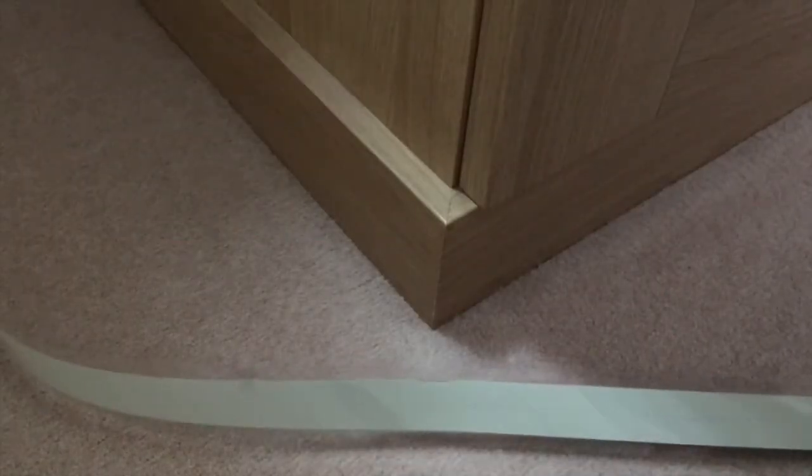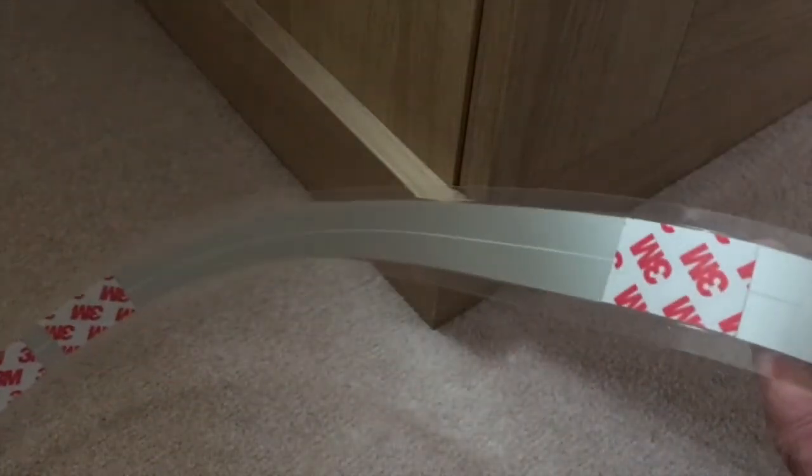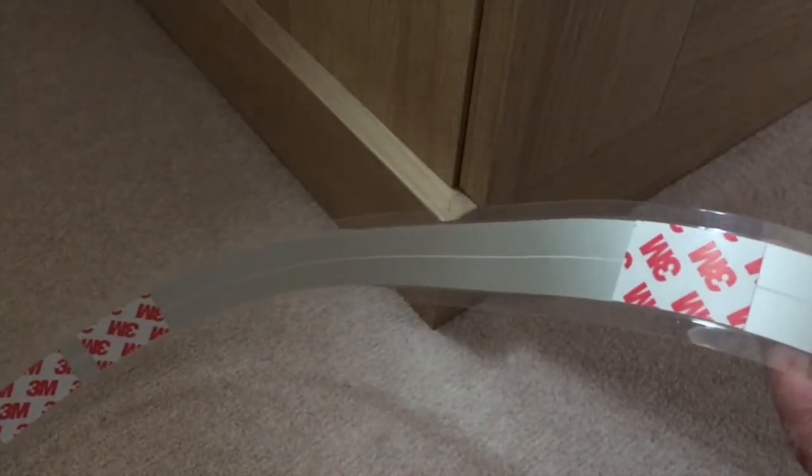What we're going to demonstrate now is putting light tape around the corner of a plinth or some sort of cupboard, exhibition stand, or whatever.